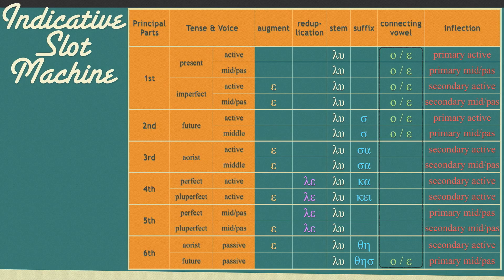Please keep in mind that as we talk about the indicative slot machine, we are talking about what we call the strong verb, i.e. verbs like Lua that follow the rules. I have already mentioned some issues that you will be introduced to later, such as vowel contraction due to slot 1 or slot 5, as well as consonant interaction because of slot 4. There are also verbs that don't follow the slot machine at all, and we'll talk about them later.